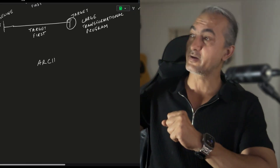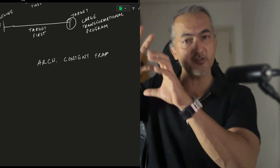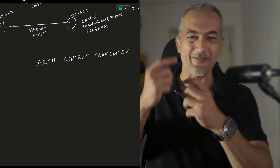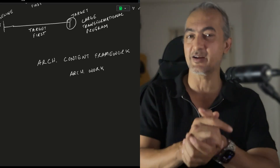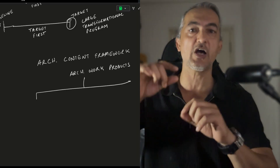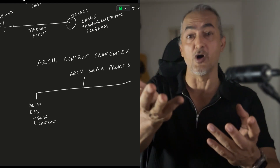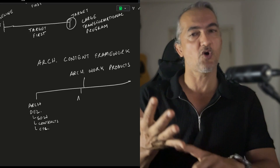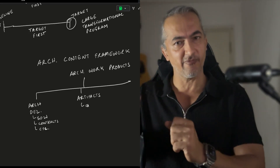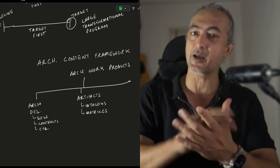Then you have your Content Framework, which is defined according to the Architecture Development Method. For example, it specifies what artifacts you create in each phase — Architecture Vision, Business Architecture, Data Architecture, Application Architecture, and so on. There are three types of architectural work products: architectural deliverables, which are large documents contractually signed — things like Statement of Architecture Work or architecture contracts — and then you have artifacts, which come in three types: catalogs, matrices, and diagrams. Catalogs are lists of things, matrices are tables of things, and diagrams are pictures of things.